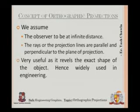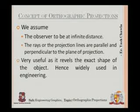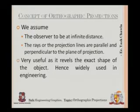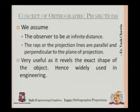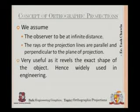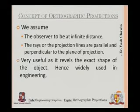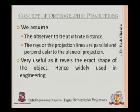Because the observer is at an infinite distance, the rays of projection are parallel and either parallel or perpendicular to the planes. If you're viewing from the front, the rays are parallel to the horizontal plane and perpendicular to the vertical plane. If viewing from the top, they are perpendicular to the horizontal plane and parallel to the vertical plane. Orthographic projection is very useful because it reveals the exact shape of the object from different views, and those different views can be combined to produce an isometric object.